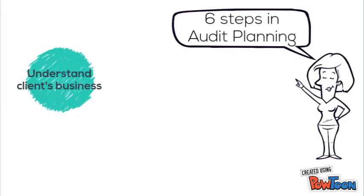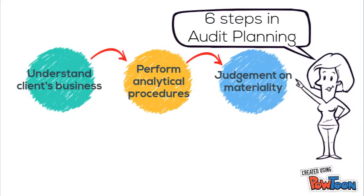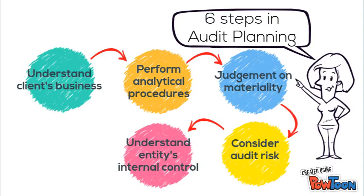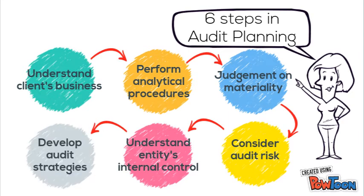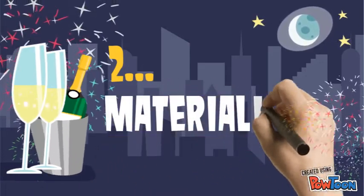There are 6 steps in audit planning. First, we need to understand the client's business. Second, we need to perform analytical procedures such as analysis of significant trends and ratios. Third, we need to determine which area is material and needs more focus. Fourth, identify the risk. Fifth, understand the entity's internal control. And the last one, we need to develop audit strategies such as an audit program.